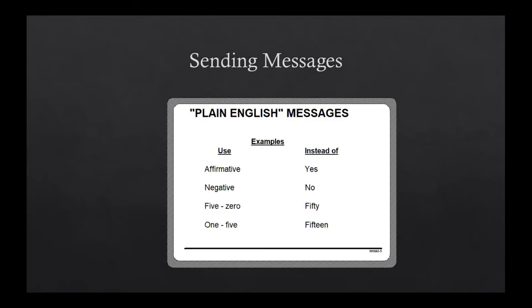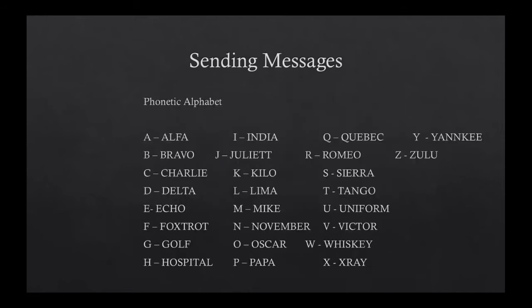For plain English messages, use 'affirmative' instead of yes, 'negative' instead of no, say '5-0' instead of 50, and '1-5' instead of 15 — this helps communicate effectively and avoid mistakes. The phonetic alphabet is: Alpha, Bravo, Charlie, Delta, Echo, Foxtrot, Golf, Hotel, India, Juliet, Kilo, Lima, Mike, November, Oscar, Papa, Quebec, Romeo, Sierra, Tango, Uniform, Victor, Whiskey, X-Ray, Yankee, and Zulu. That is how we spell things out to ensure no confusion.